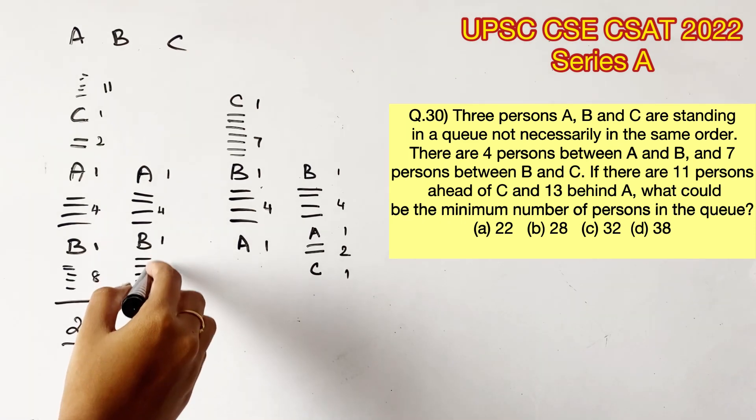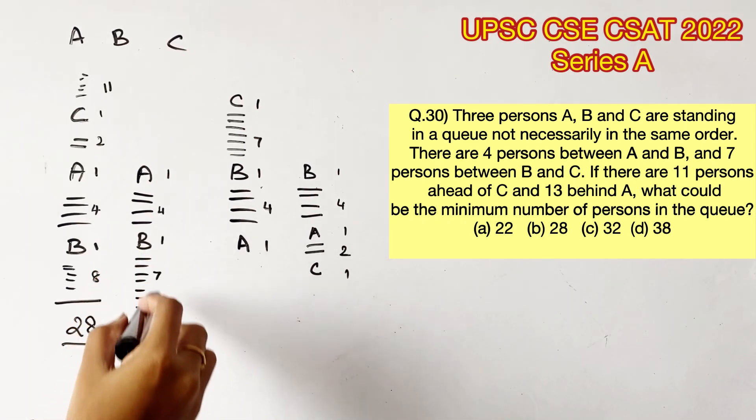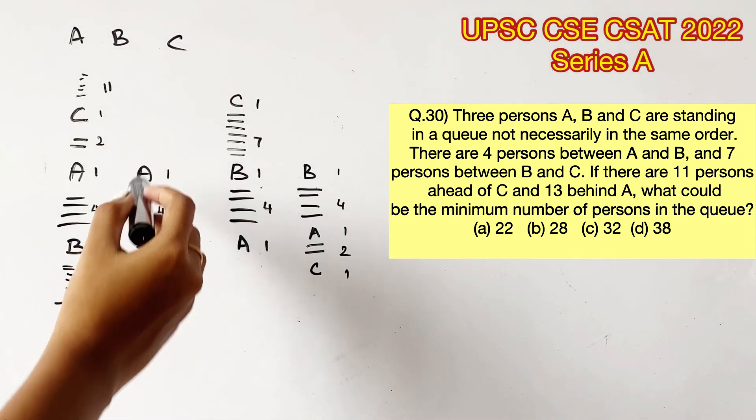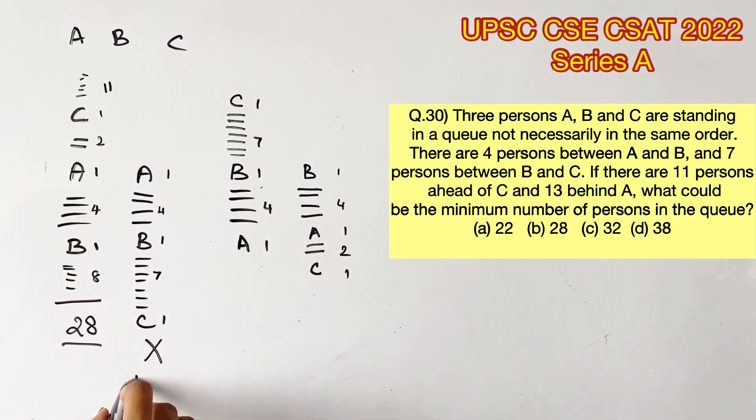Now let's mark the second possibility. So let's mark 13 people behind A. If you count, there is already 13 behind A. And there should be only 11 ahead of C. But there is 13. So this case is not possible at all. Let's eliminate this case.